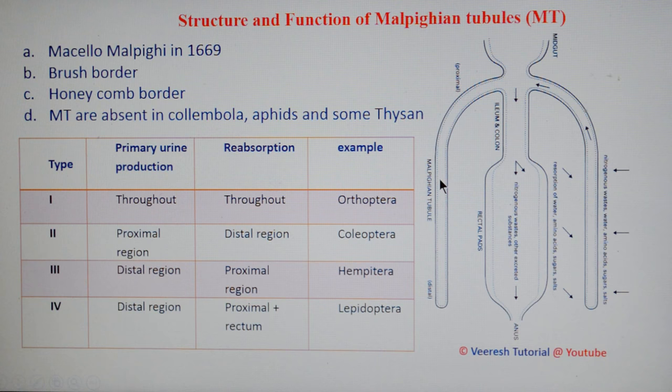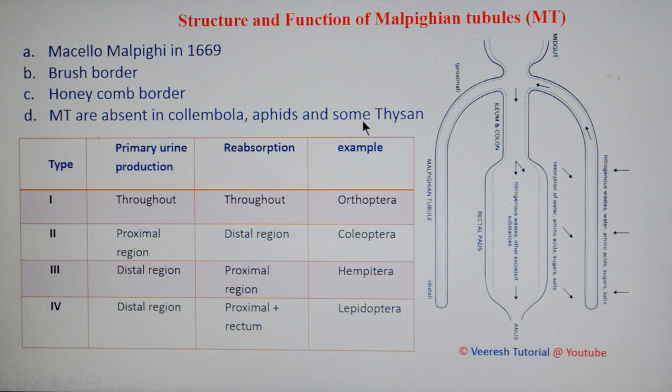The number of Malpighian tubules varies with the insect. In some insects there may be only two Malpighian tubules, while in others there may be about 100. Malpighian tubules are absent in Collembola, Aphids, and some Thysanura.